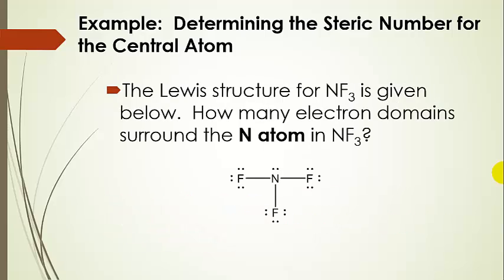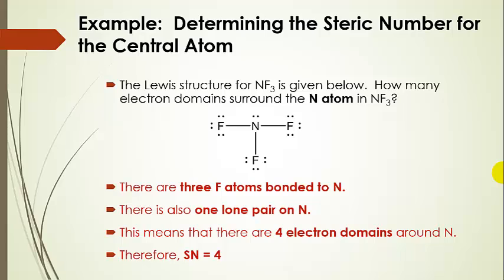Try another one. This one is just a little bit different — there are still three fluorine atoms bonded, but we also have a lone pair on the central atom. So when we add up the three bonded atoms and the lone pair, we end up with a steric number of four.